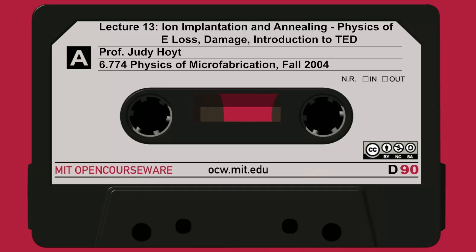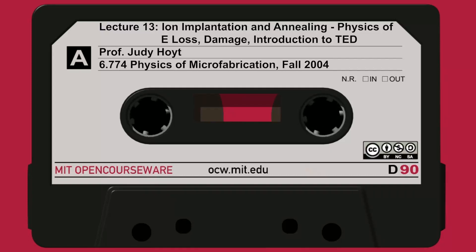Another way to think of it: a collision with electrons around the atoms transfers some momentum to those electrons from the ion. The ion has this electron cloud around it, and it transfers momentum, resulting in locally slowing down the ion and reducing its velocity. Again, there's no change in direction of the incoming ion when this process happens. Both mechanisms don't change direction and both are related to the speed or velocity of the ion.